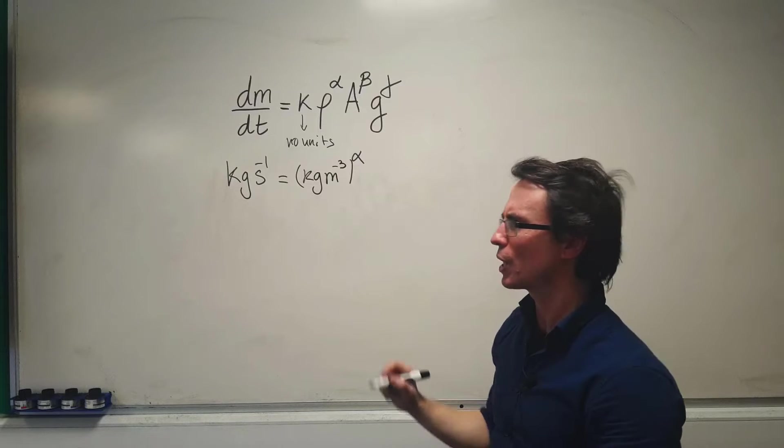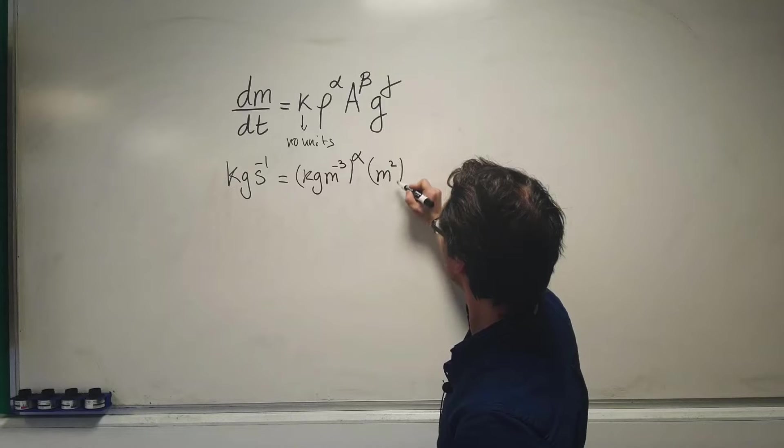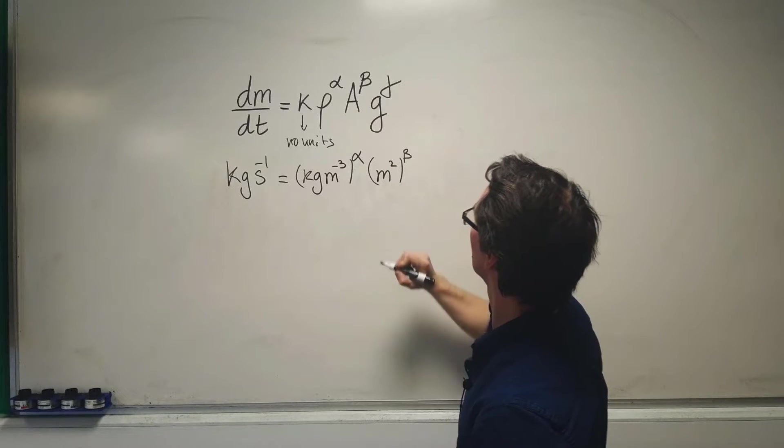Then we have A, which is meters squared, raised to the power of beta.